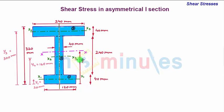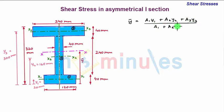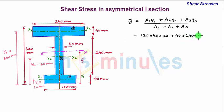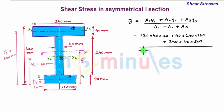Now we find y-bar, the location of the centroidal axis of the complete eye section from the bottom-most part. y-bar is given as (A1·y1 + A2·y2 + A3·y3) / (A1 + A2 + A3). Substituting values: A1 = 120 × 40, y1 = 20; A2 = 40 × 240, y2 = 160; divided by (A1 + A2 + A3). Solving, y-bar = 188 mm.